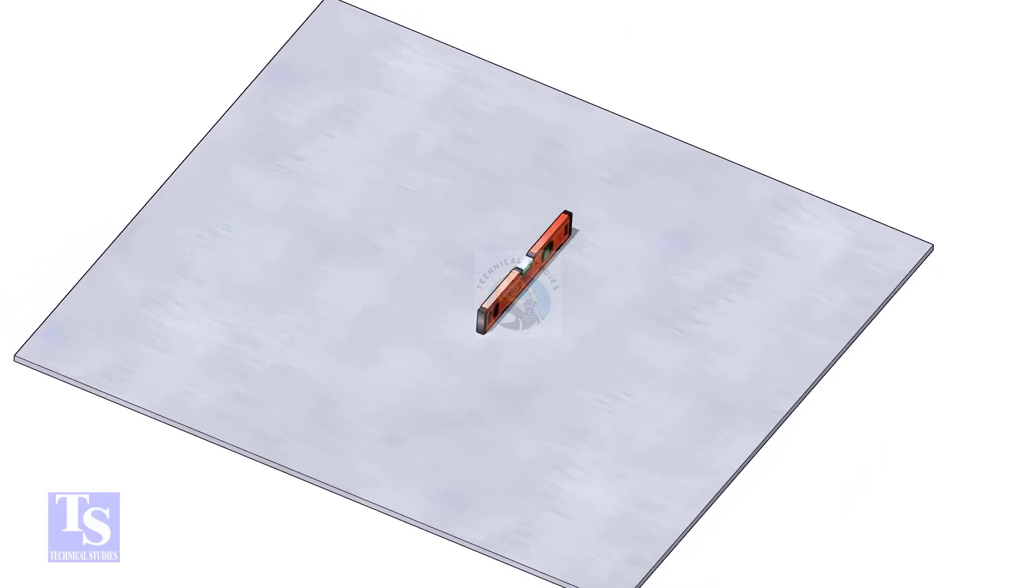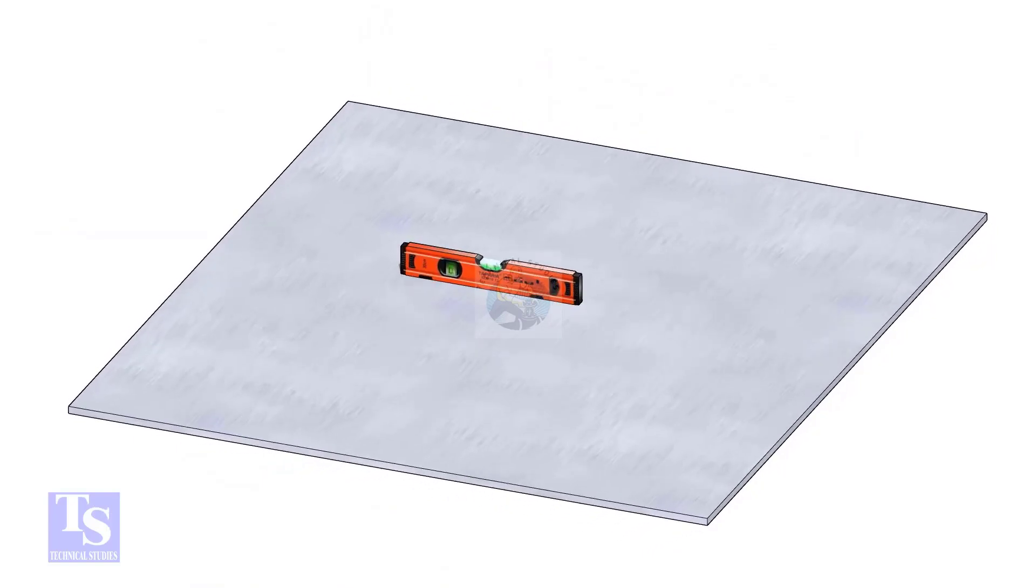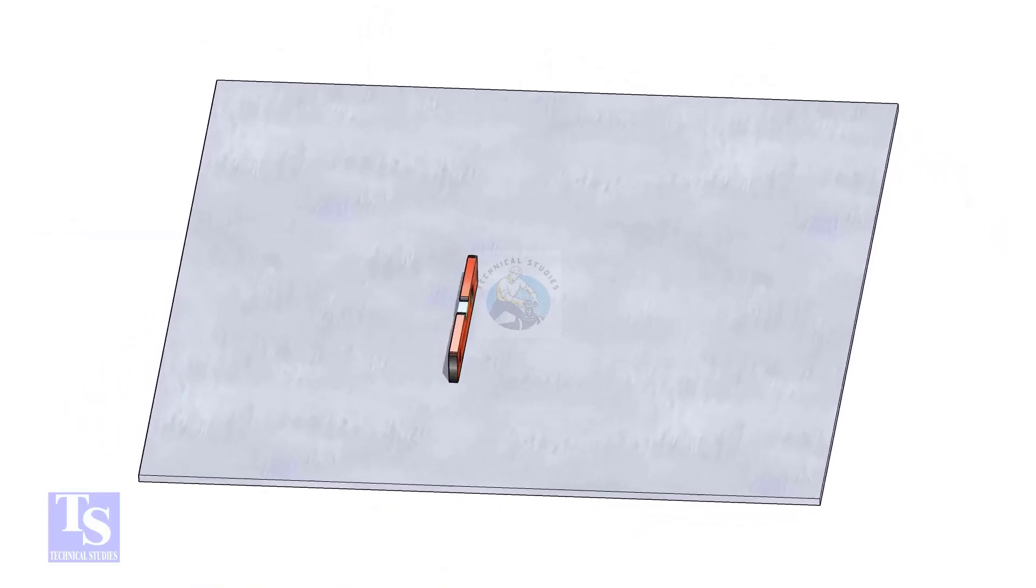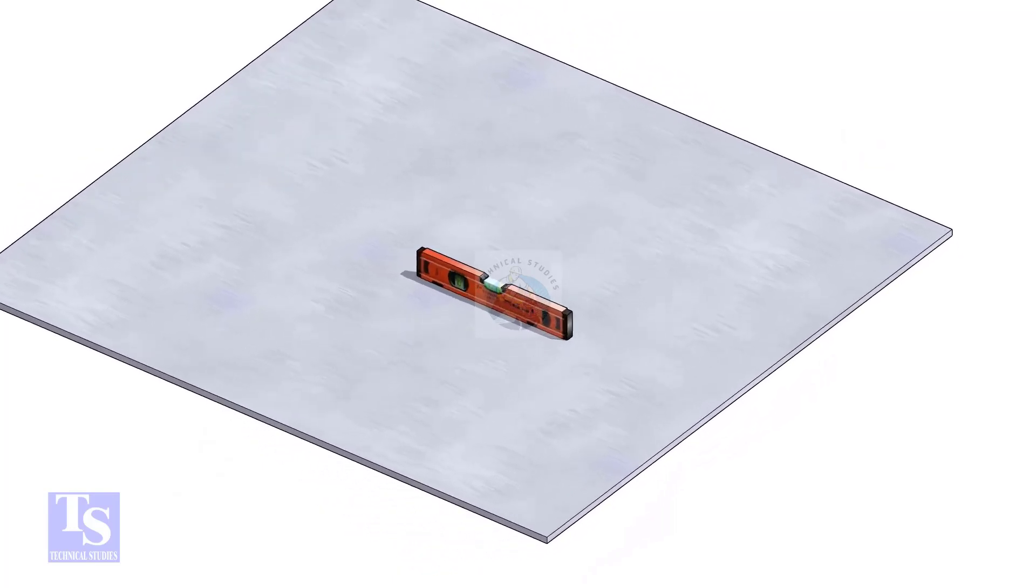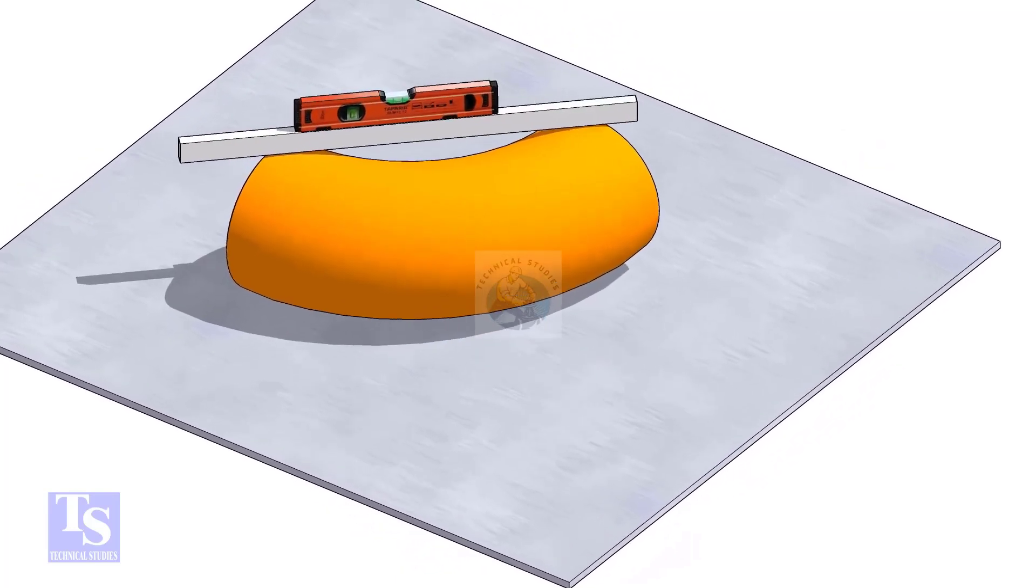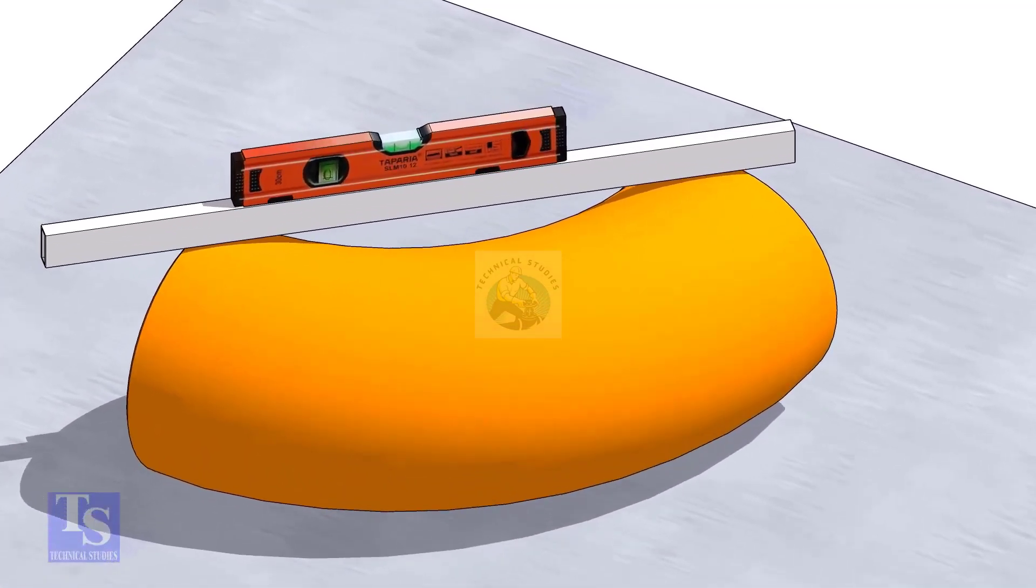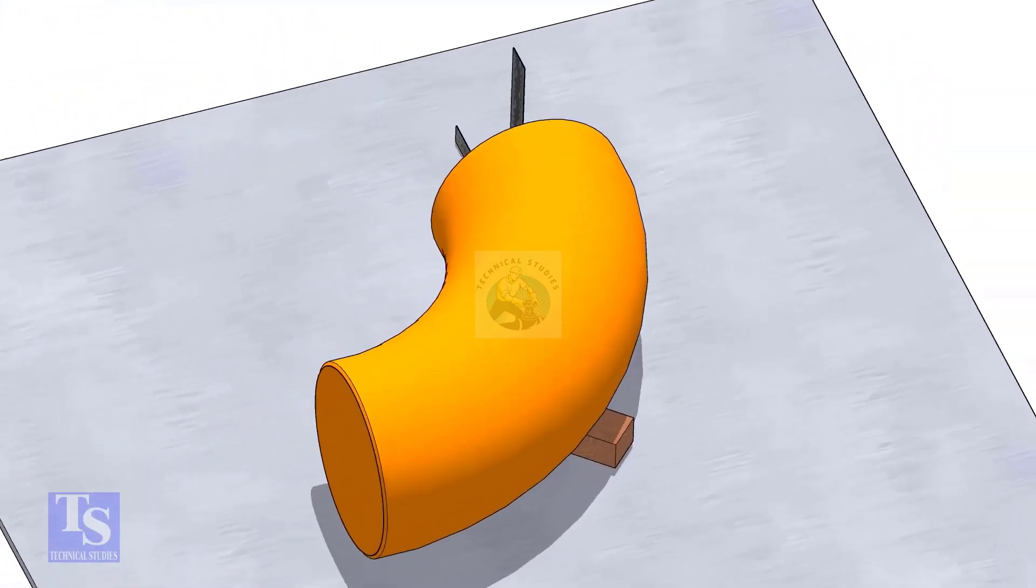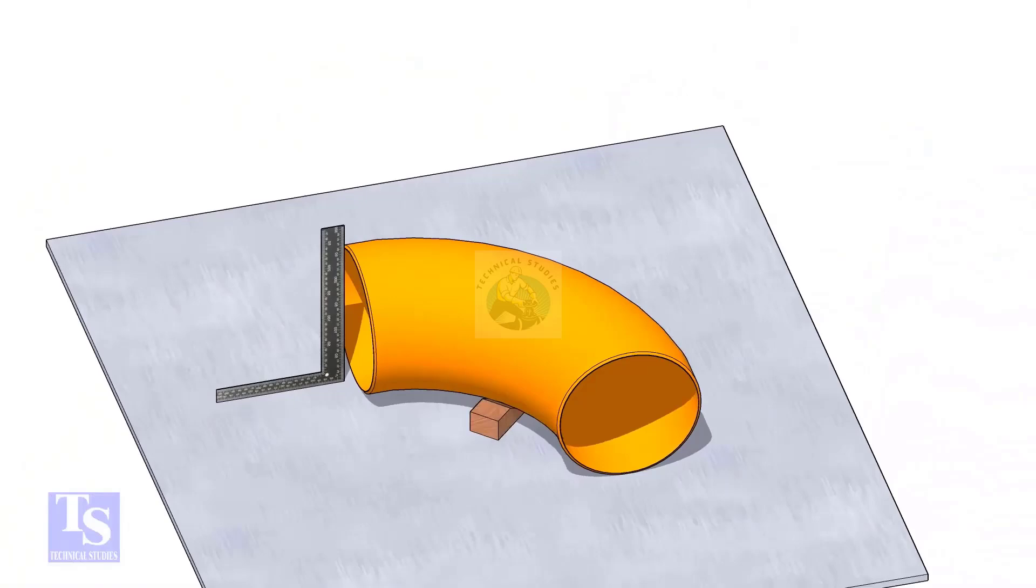Let us mark the center of the elbow. Choose a leveled plate and put the elbow on it. Check the level of the elbow. Check the squareness of the face of the elbow with the plate. If necessary, put some packing below as shown.